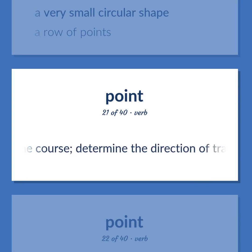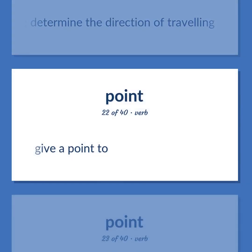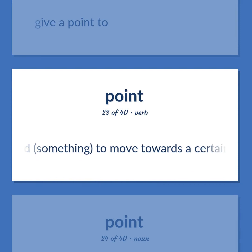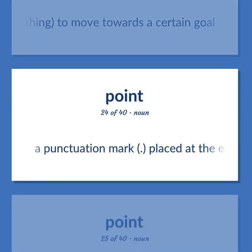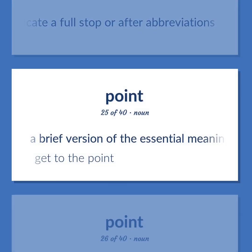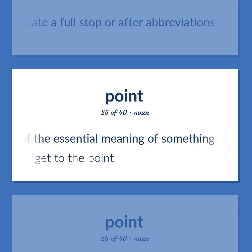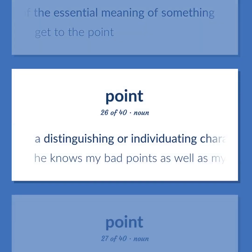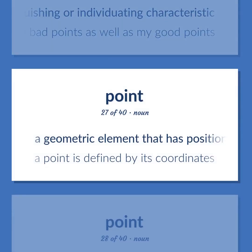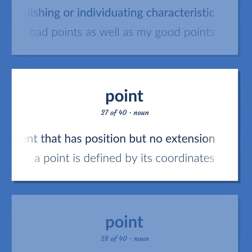Point: Direct the course; determine the direction of traveling. Give a point to. Intend something; to move towards a certain goal. A punctuation mark placed at the end of a declarative sentence to indicate a full stop, or after abbreviations. A brief version of the essential meaning of something — get to the point. A distinguishing or individuating characteristic — he knows my bad points as well as my good points. A geometric element that has position but no extension — a point is defined by its coordinates.